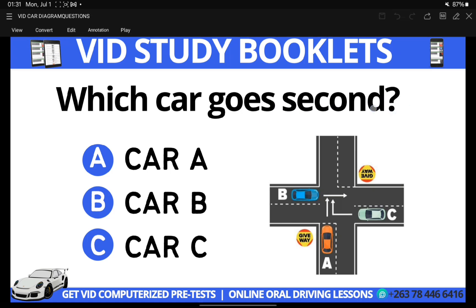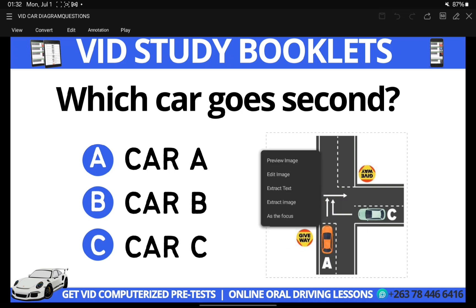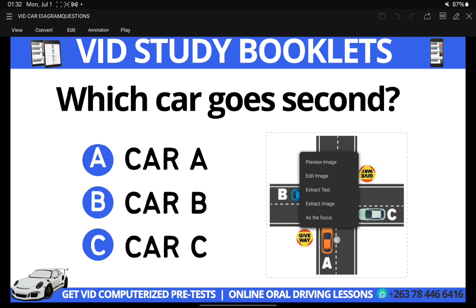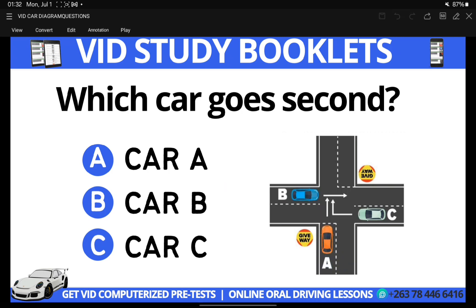We're looking for the car that goes second. We have three cars here: Car B, Car A, and Car C. As you can see, Car A is coming to a giveaway sign. If a car is coming to a giveaway sign or a stop sign, it should give the right of way to traffic coming from both sides — from the right and from the left. That means Car A is automatically the last car to go.